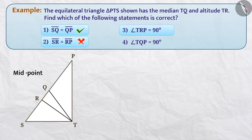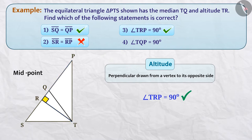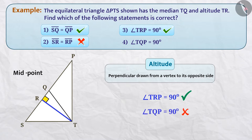For the third statement, we need to understand the altitude. A perpendicular drawn from a vertex to its opposite side is called an altitude of a triangle. We can say that angle TRP is equal to 90 degrees, so the third option is correct. Only one perpendicular can be drawn on a line from a vertex. Since we have obtained this perpendicular TR from vertex T, there can't be any other line segment perpendicular to side SP from vertex T. Therefore, angle TQP cannot be equal to 90 degrees, and the fourth option is incorrect.